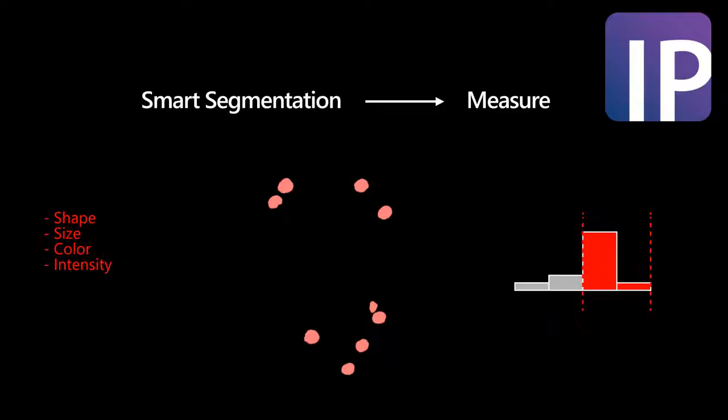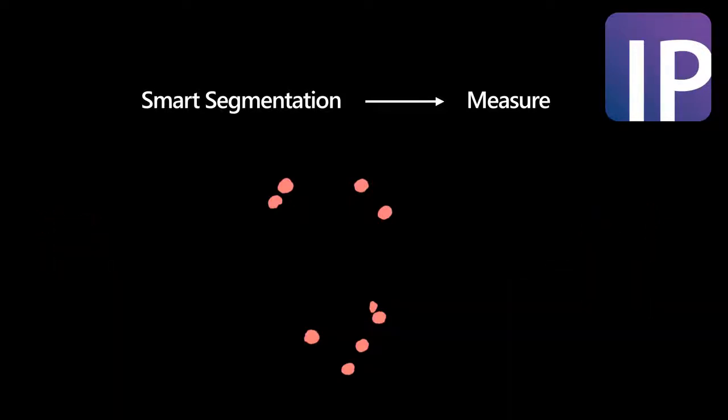Should some objects need to be excluded from the selection, filter ranges can be easily set based on shape, size, color, and intensity. Further refining the specificity of the filtered results to the original objects of interest is done to optimize the results.